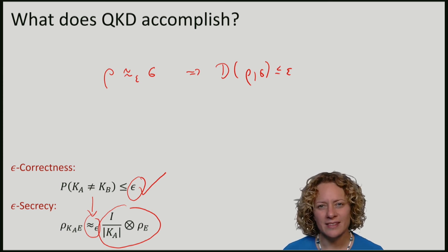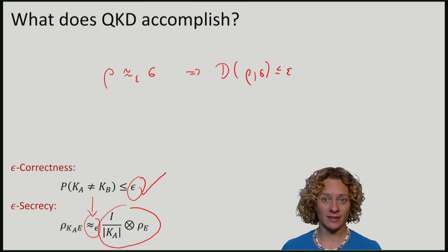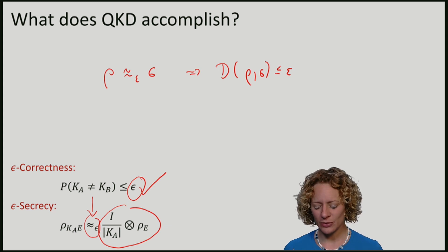So why is this the right definition of security for quantum key distribution? The definition of trace distance is precisely related to how well two states can be distinguished. If two states are epsilon close in trace distance, when epsilon is extremely small, no process in the universe can distinguish the states very well.